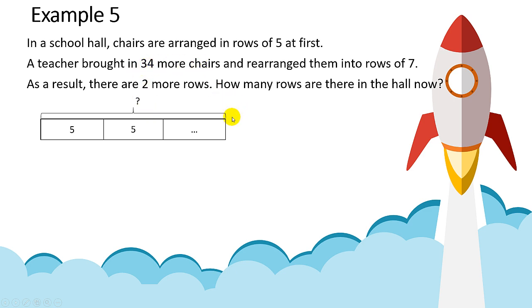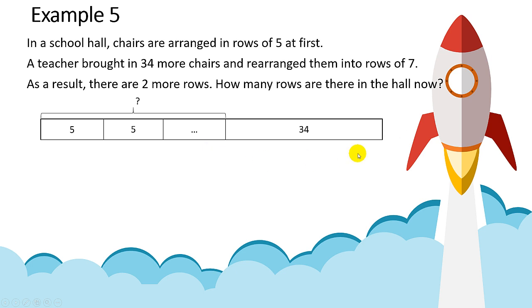Over here, you must extend by 34. Now the total chairs are being rearranged into rows of seven.